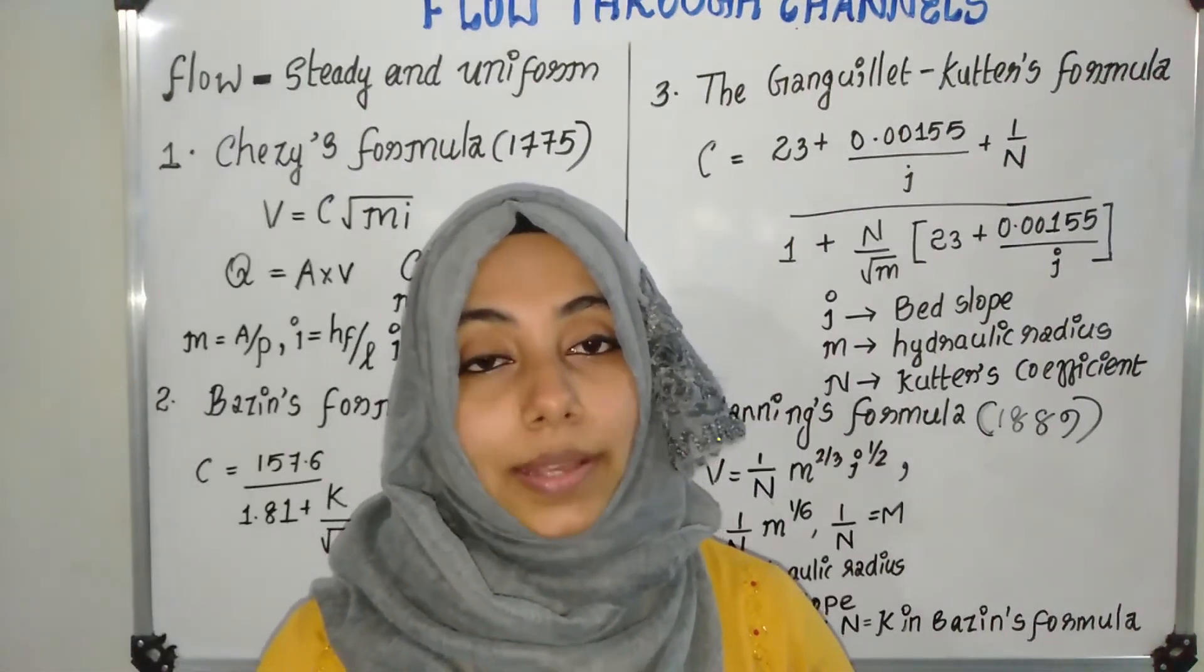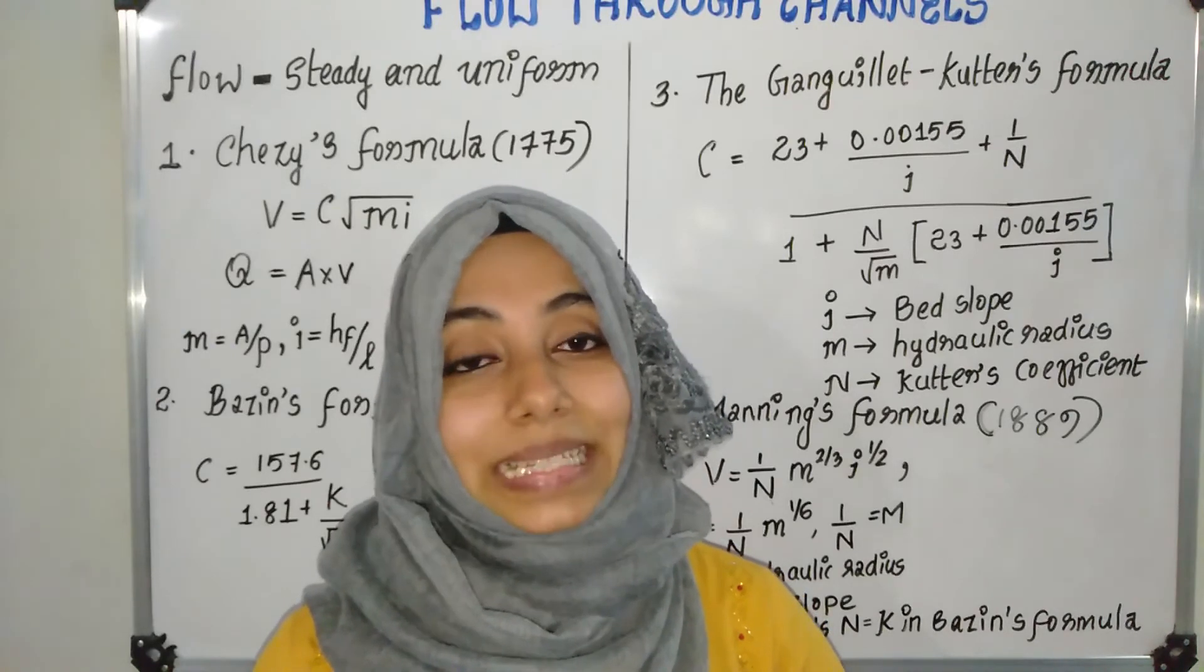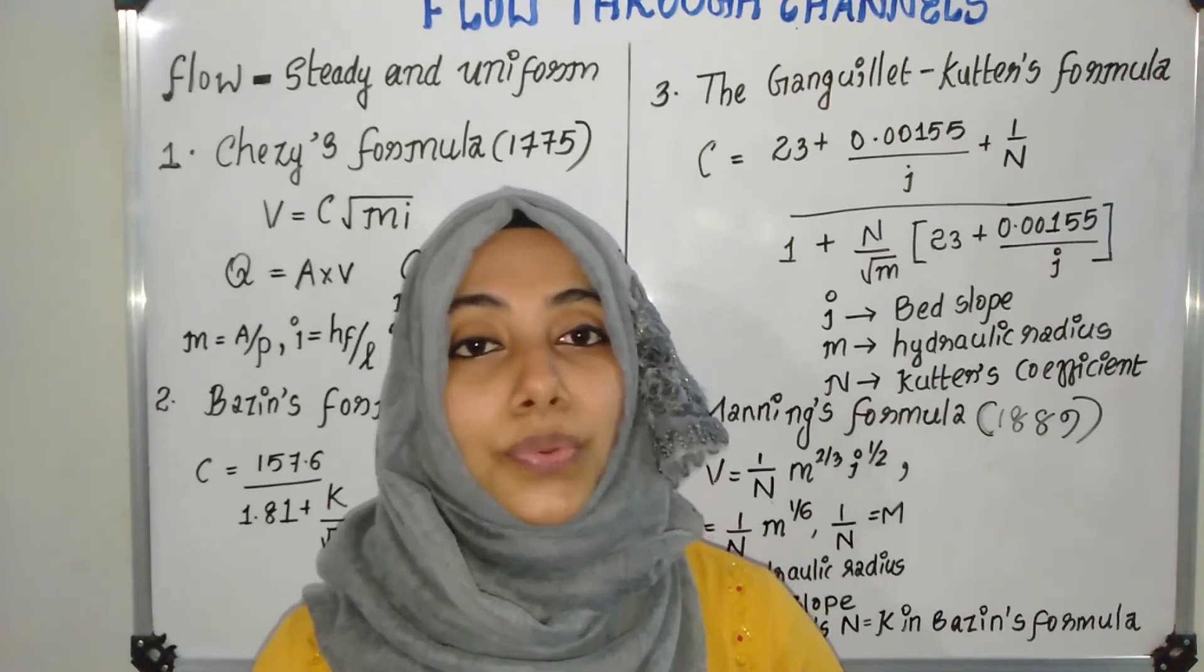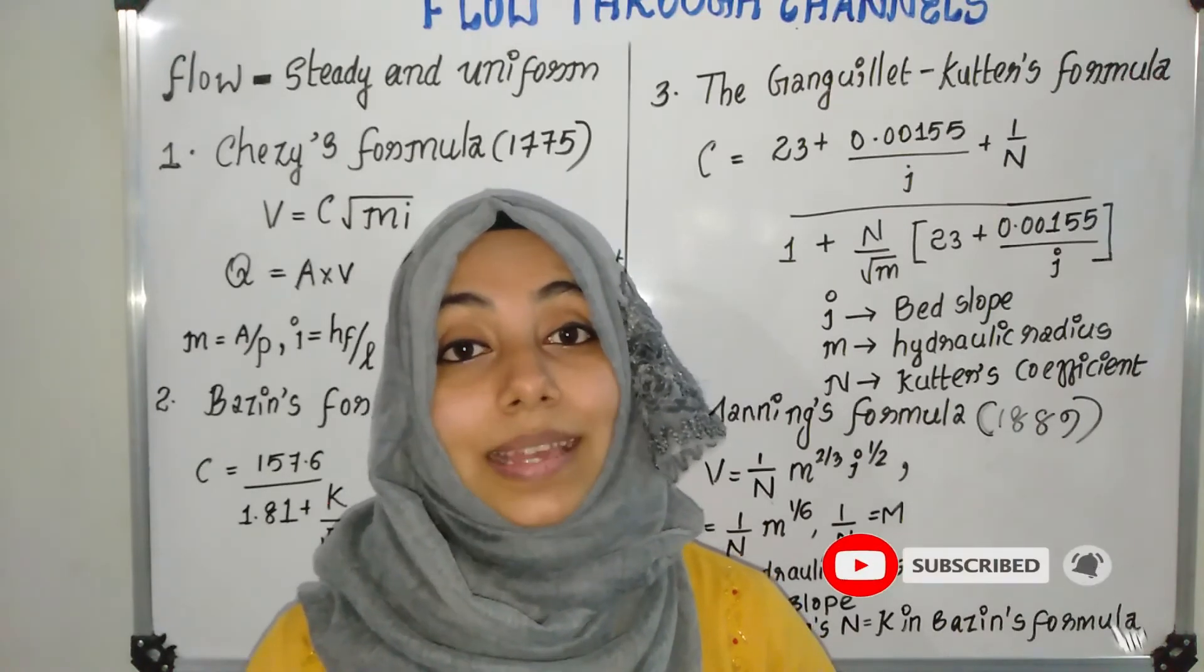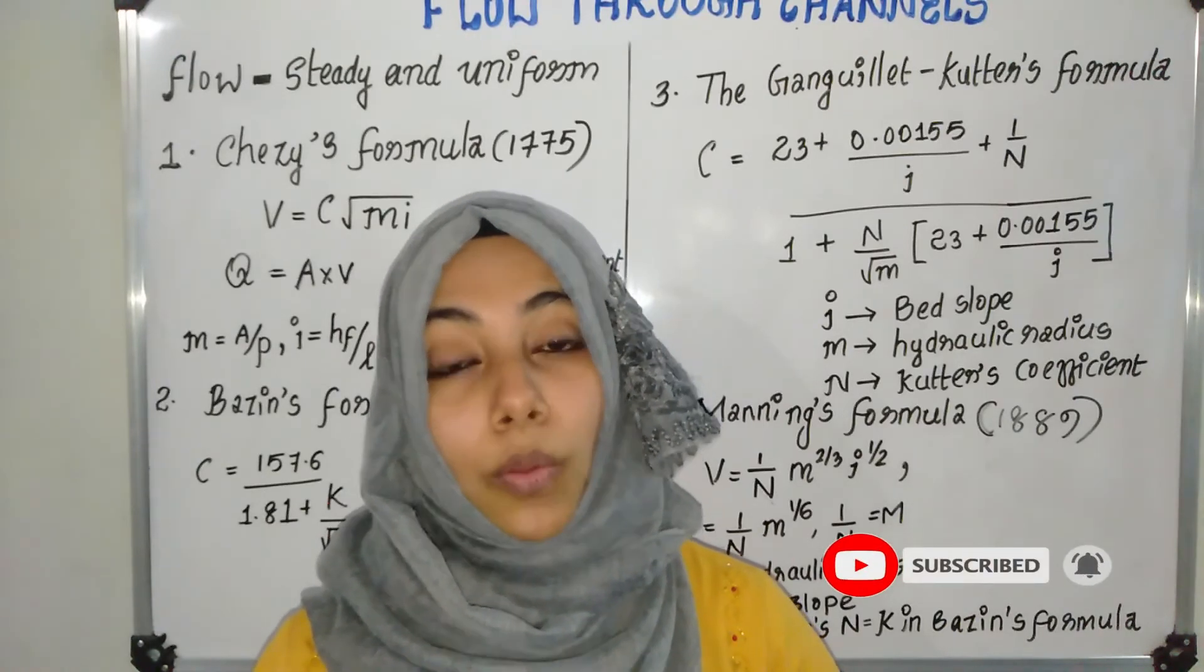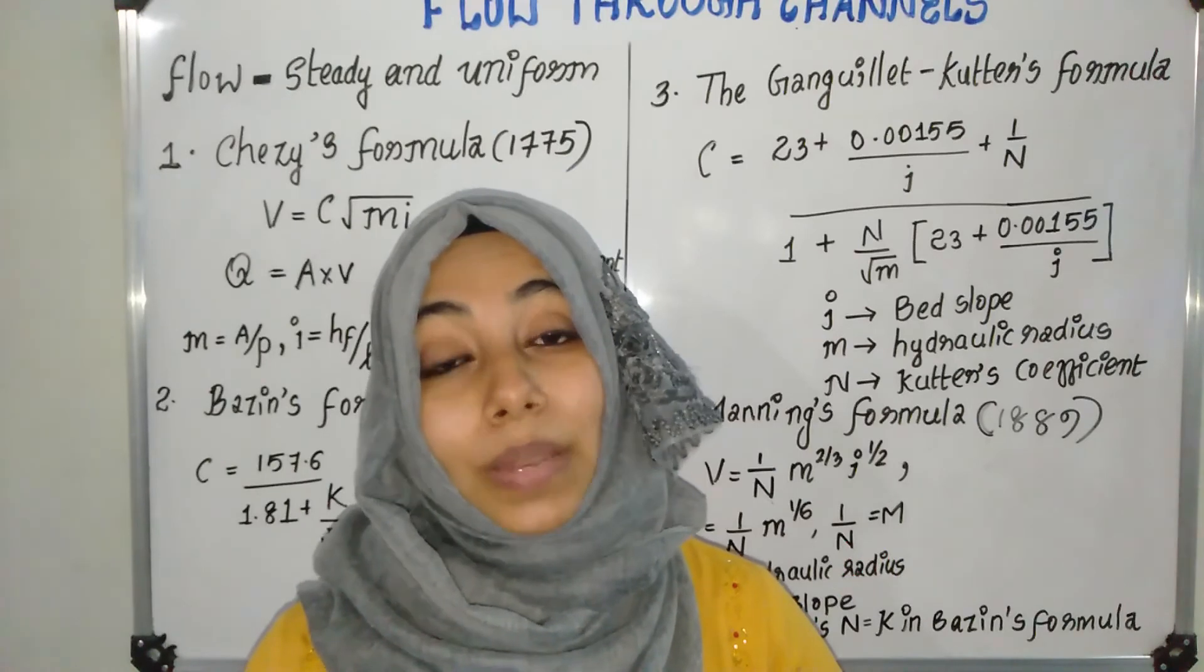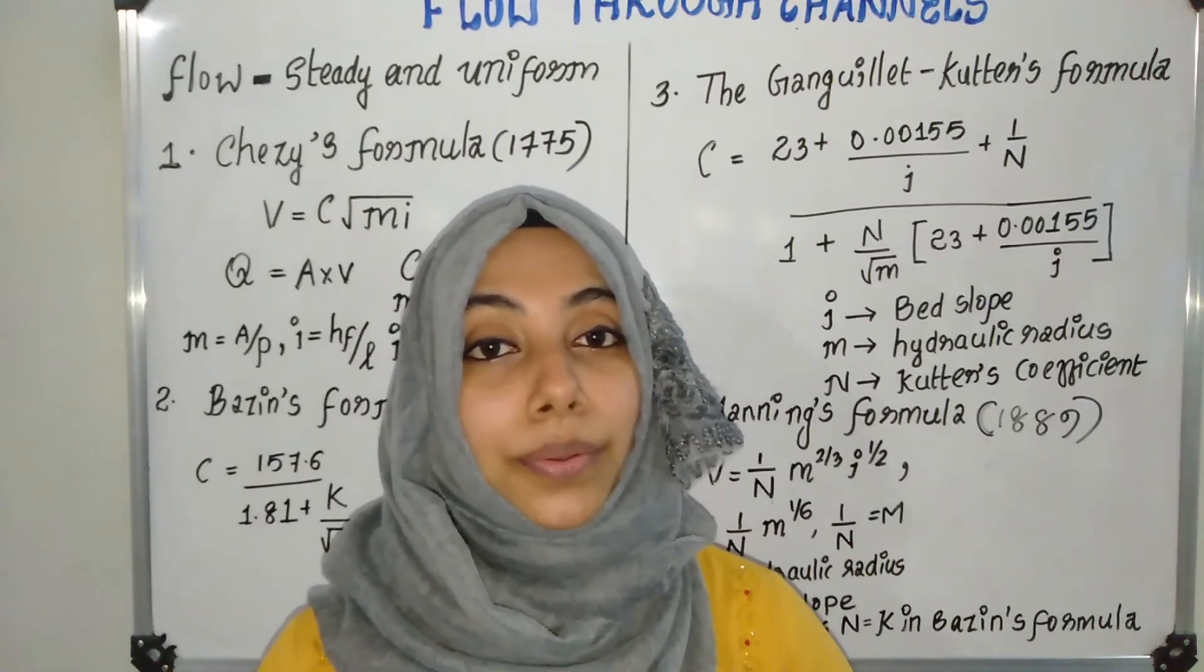So these are the four formulas: Chezy's formula, Bazin's formula, Kutter's formula and Manning's formula. These four formulas are important in case of problems. Please go through it. Thank you.